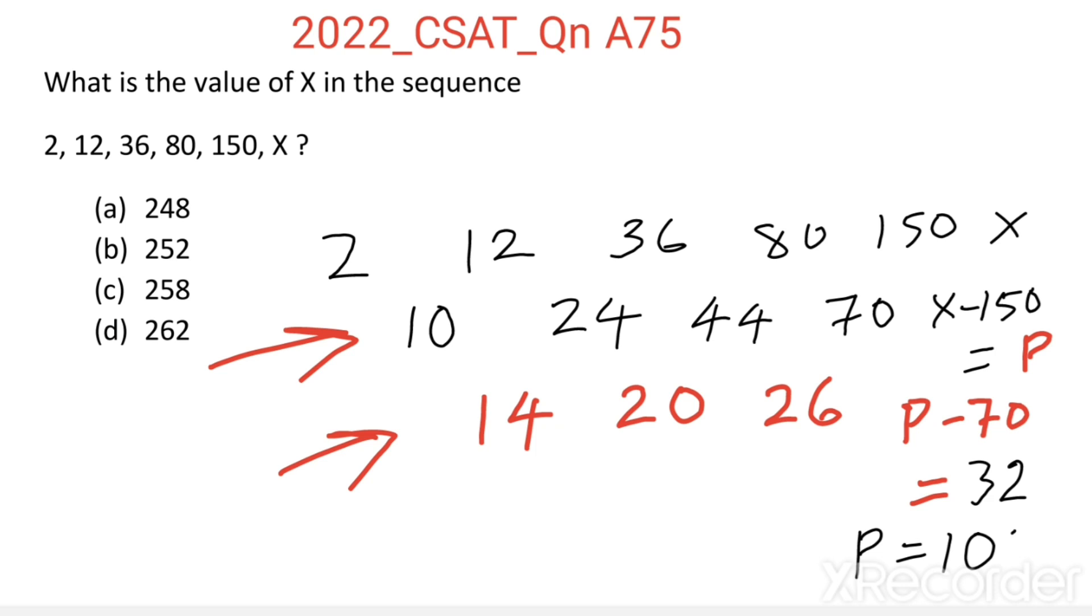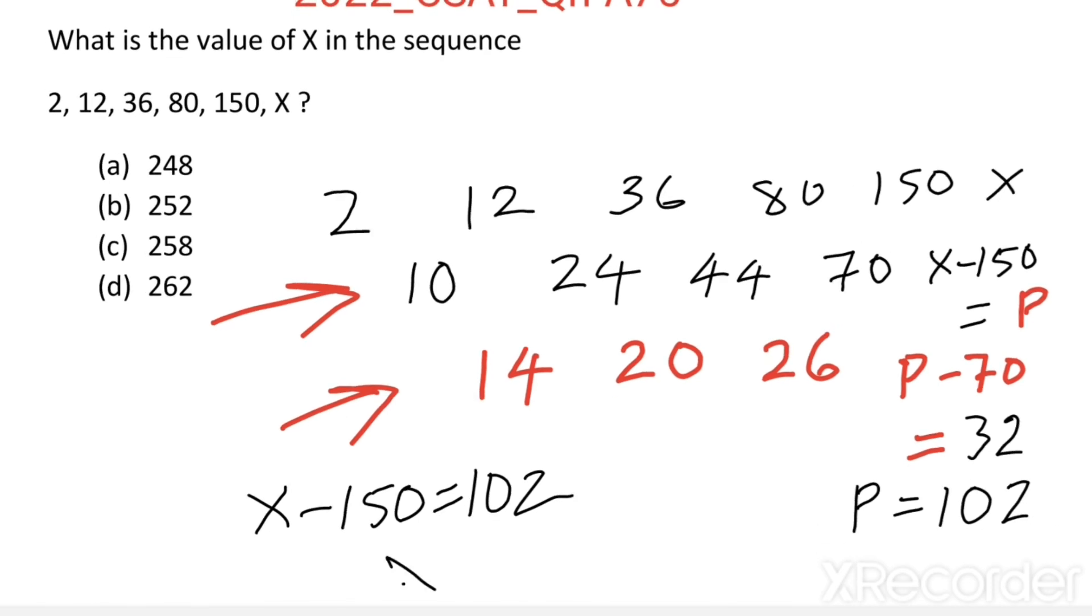70 plus 32 equals 102, then X minus 150 equals 102, so X equals 150 plus 102, which is 252. Option B is the right answer.